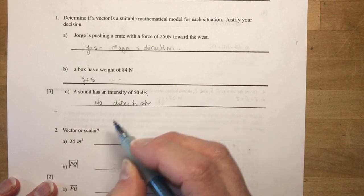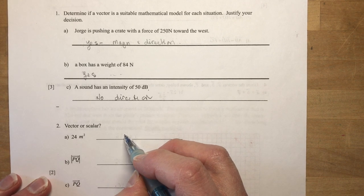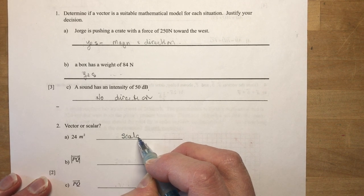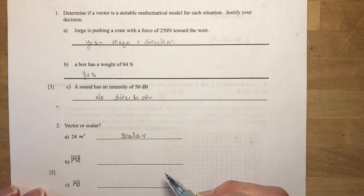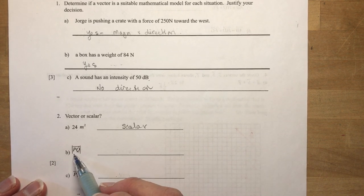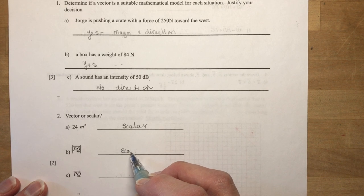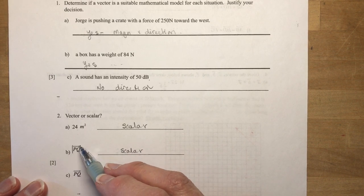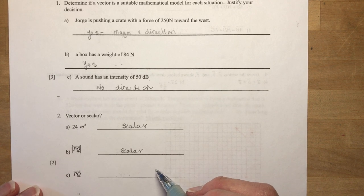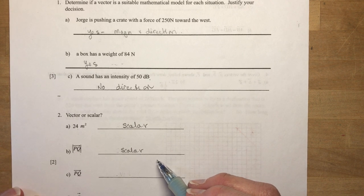Vector or scalar? 24 meters squared? No, it's a scalar, no vector. It's a measurement, no direction. The magnitude of vector PQ is also a scalar. Just because you see that little vector sign, you have to look that it's the magnitude of the vector, which of course has no direction.